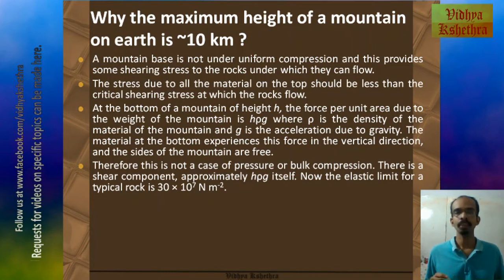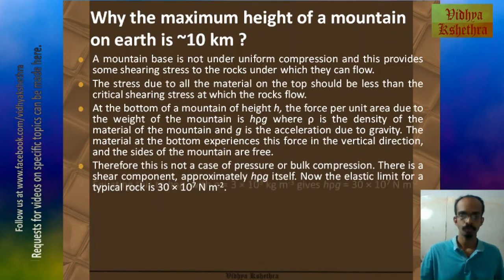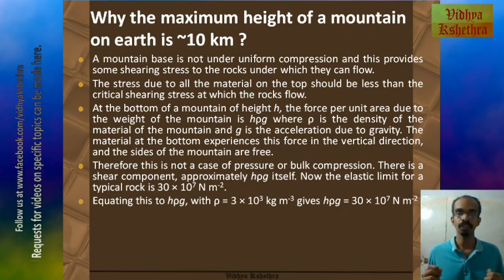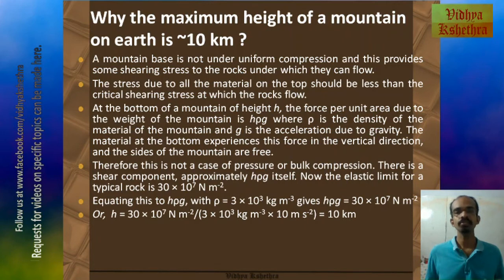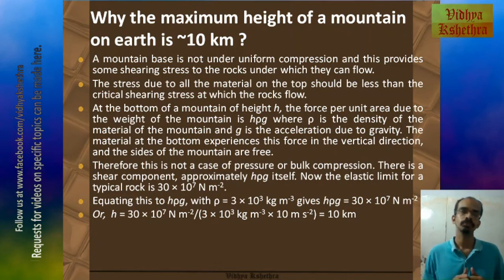The elastic limit for a typical rock is 30×10⁷ N/m². Equating this to h·ρ·g, with ρ equal to 3×10³ kg/m³ and g approximately equal to 10, we get h·ρ·g equals 30×10⁷ N/m², giving h almost equal to 10 km. This is why the maximum height of a mountain on Earth is almost equal to 10 kilometers.